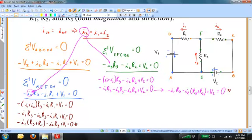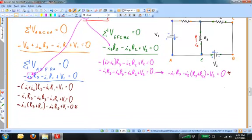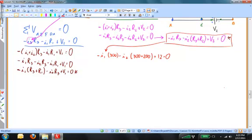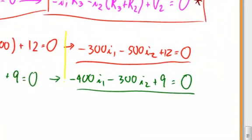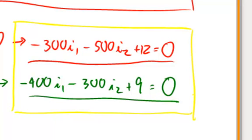Writing the equations with numbers substituted: the first becomes negative 300 I1 minus 500 I2 plus 12 equals zero. The second becomes negative 400 I1 minus 300 I2 plus 9 equals zero. Now I have two equations and two unknowns, and I can solve that either by using TiSolve or by finding a common multiple and adding or subtracting the equations.